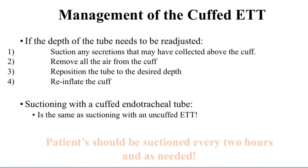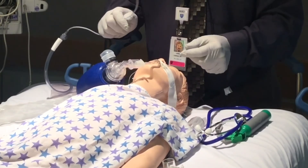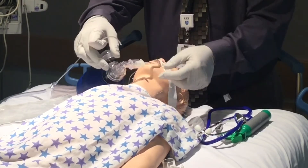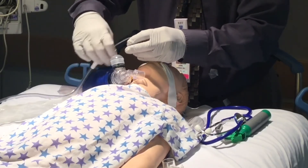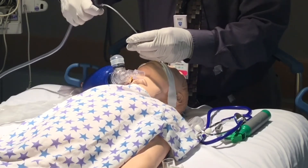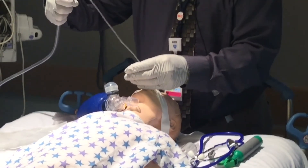Management of the cuffed endotracheal tube: if the depth of the tube needs to be readjusted, suction any secretions that may have collected above the cuff, remove all air from the cuff, reposition the tube to the desired depth, then re-inflate the cuff. Suctioning with a cuffed endotracheal tube is the same as suctioning with an uncuffed endotracheal tube — insert the catheter into the airway and withdraw applying intermittent suction for no more than 15 seconds.